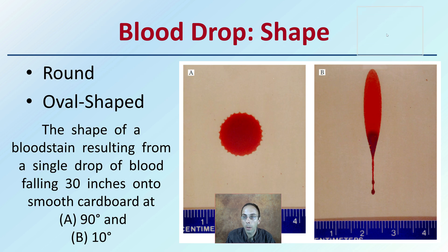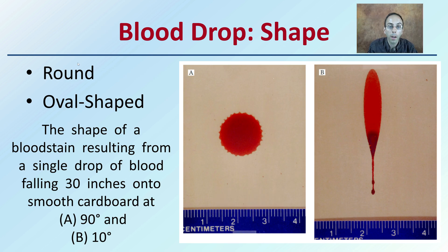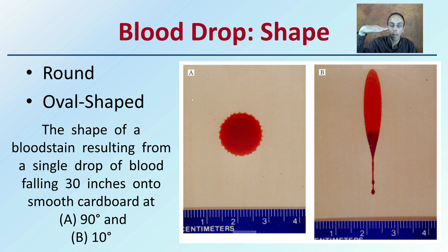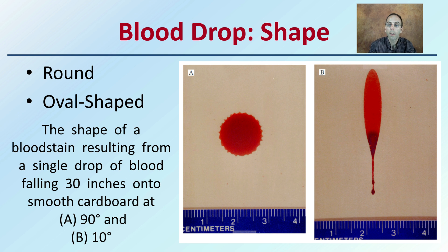The first factor is the shape of the blood drop — is it round or oval shaped? The shape of the bloodstain resulting from a single drop falling at 30 inches onto a smooth cardboard surface changes based on the angle of impact. At 90 degrees, it comes straight down; at 10 degrees, there's a much different angle of impact, which dramatically changes the shape even when the distance and amount of blood remain the same.